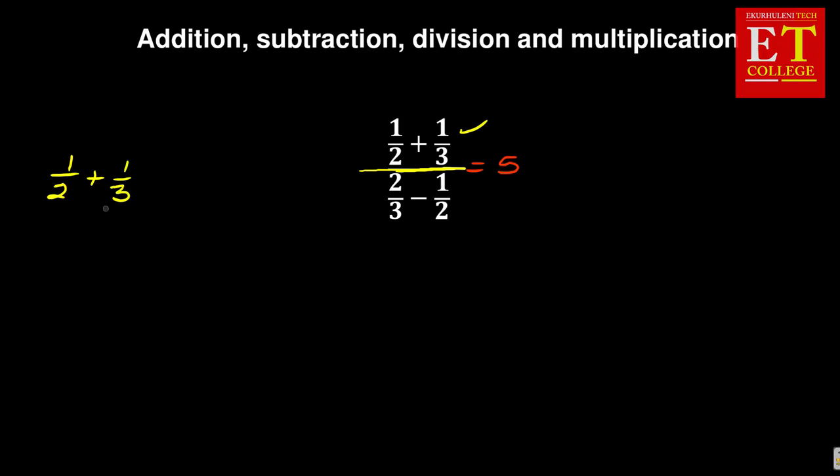In our numerator, you are given one over two plus one over three. Now, in this case, when you're adding, you're going to find the lowest common multiple of two and three. In this case, it is six. That's the smallest number that two can go into and three can go into.